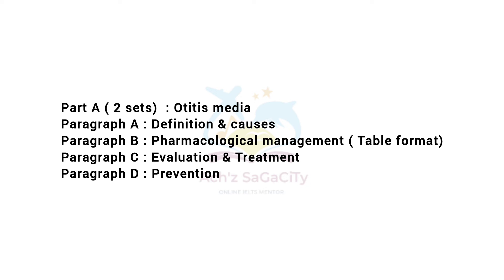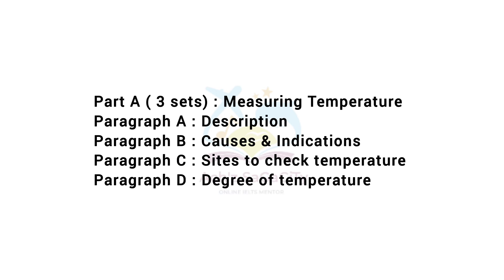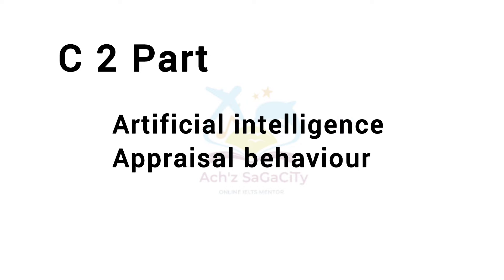Try to practice if this type of passages are available, as it will help you in your exam. Now the third set, part A was about measuring temperature — paragraph A description, paragraph B causes and indication, paragraph C sites to check the temperature, paragraph D degree of temperature. And the C2 part was about artificial intelligence and appraisal behavior.